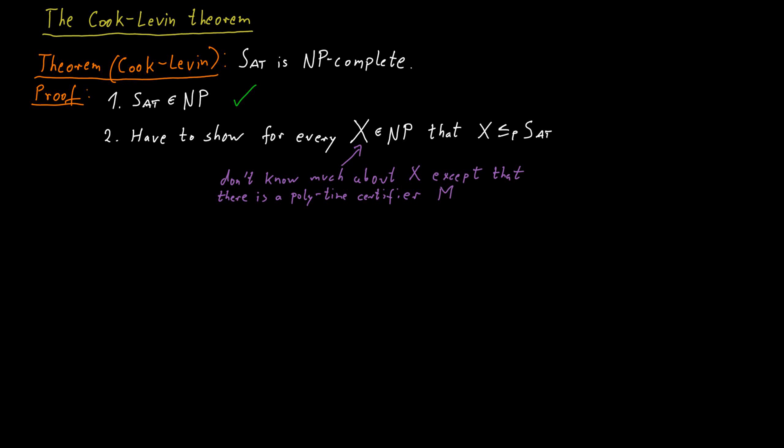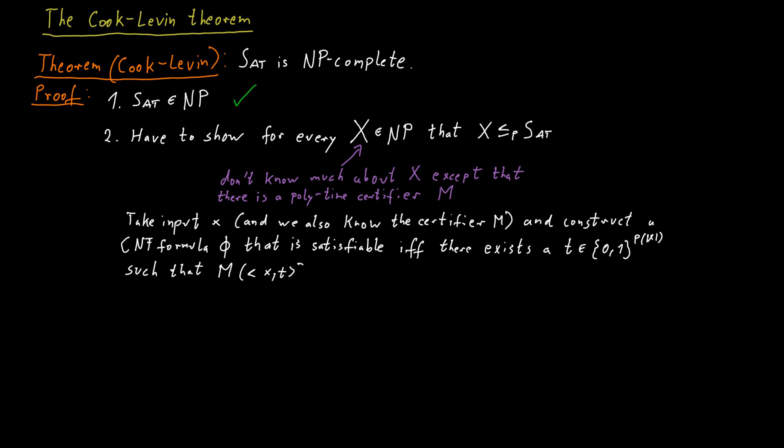And what we will aim to do is the following. We will take this certifier, this Turing machine, and we construct a Boolean formula. And this Boolean formula should have the property that it's satisfiable if and only if there is a certificate that makes this certifier accept. And otherwise the Boolean formula should not be satisfiable. And if we would manage to do something like that, we have some hope of getting a reduction, because then a word is in the language X if and only if this Boolean formula is satisfiable. And that's exactly what we need for our reduction.